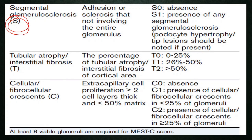The third parameter is the presence of segmental glomerular sclerosis. It is dependent on sclerosis not involving the entire glomerulus — it has to be patchy, which is what makes it segmental. A score of S0 is given if absent, and S1 if any segmental glomerular sclerosis is present.